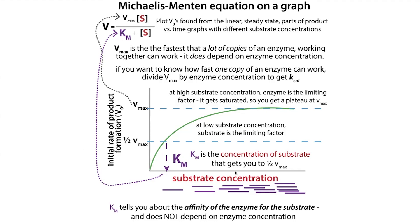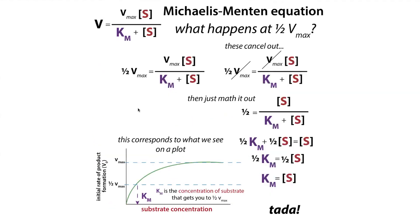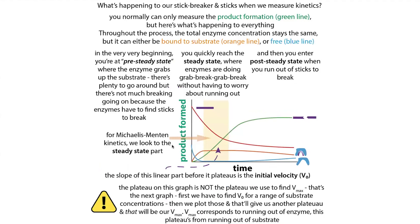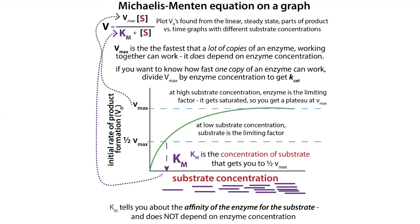When looking at one of these MM plots, you're looking at substrate concentration versus product formation — a Vmax graph, not a time graph. On a time graph with a single substrate concentration, the plateau is where you run out of substrate. On the Michaelis-Menten graph, the plateau is when all your enzyme is being used up — that's your Vmax plateau.